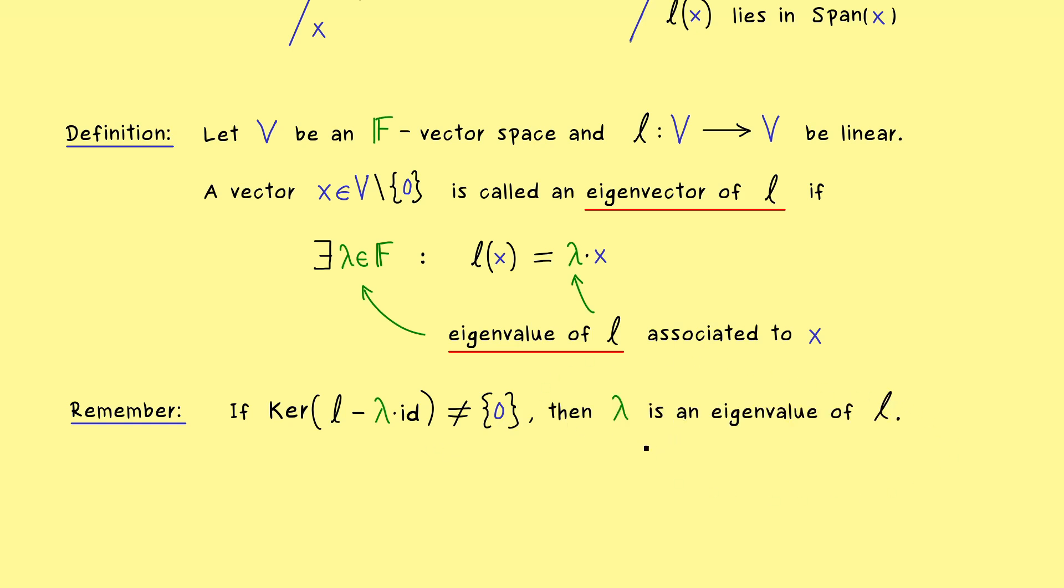The information of all the eigenvalues of a linear map is always hidden in the operation kernel of L minus lambda identity. And moreover in this case we always have infinitely many possible eigenvectors to a given eigenvalue. Namely this whole kernel without the zero vector describes all the eigenvectors. Hence this is what we call the eigenspace of the linear map L associated to the eigenvalue lambda.